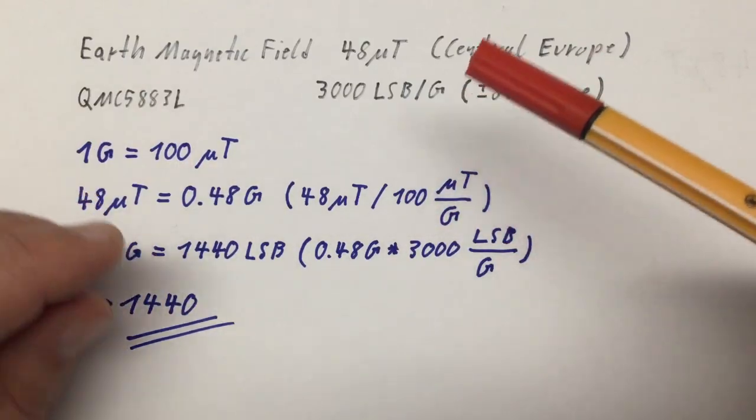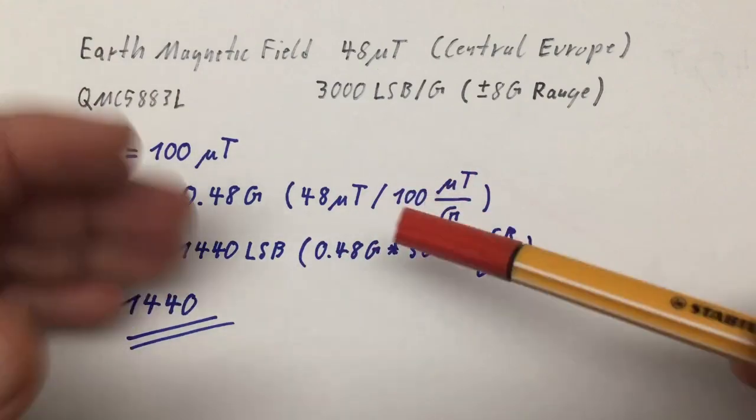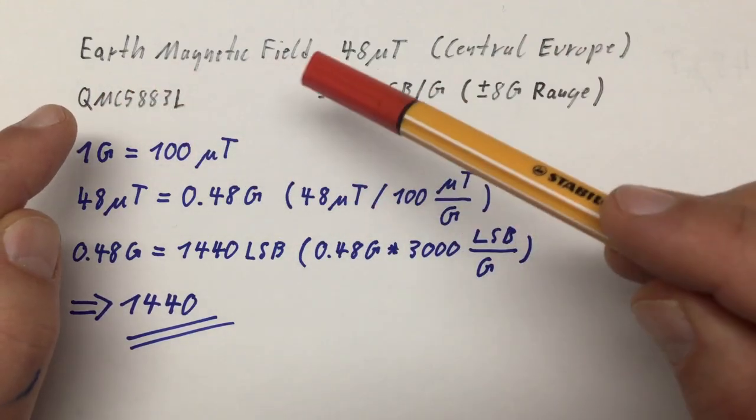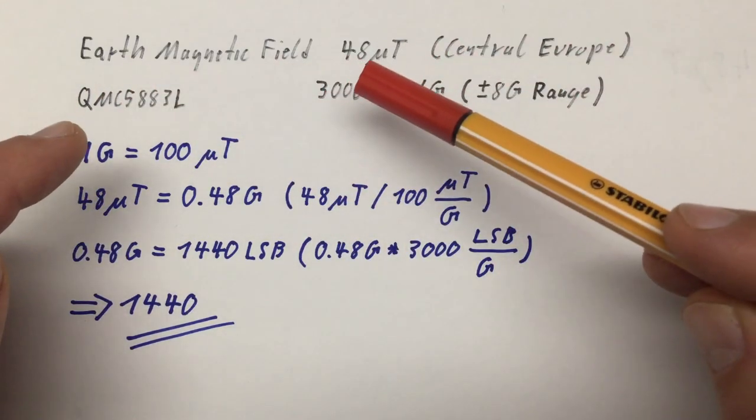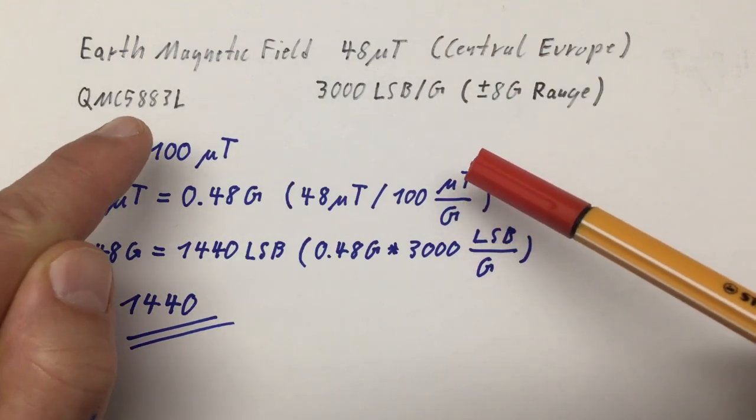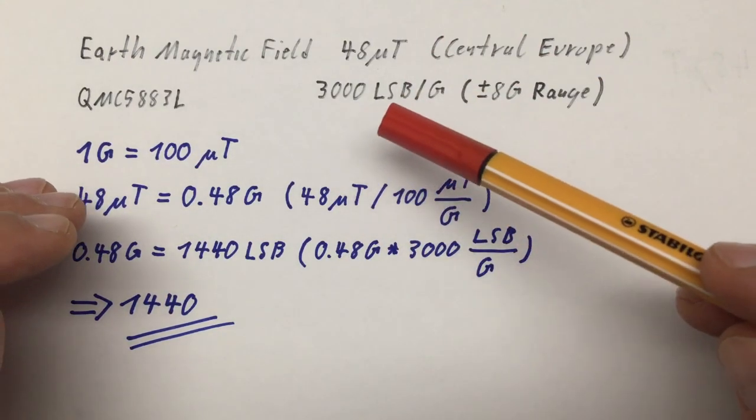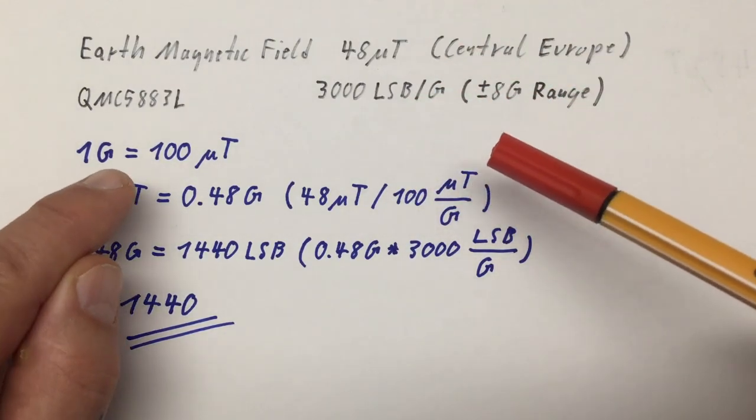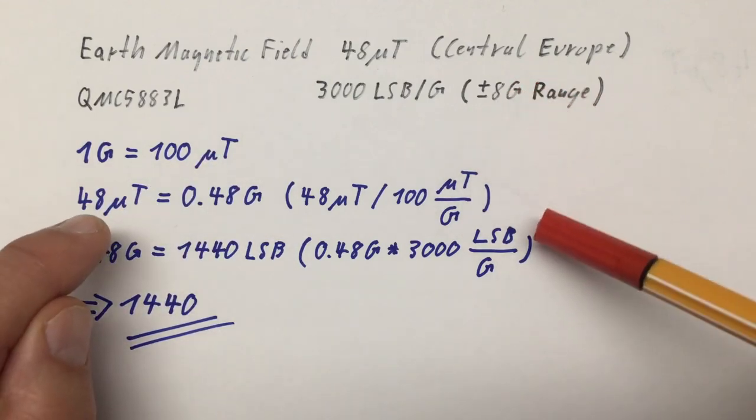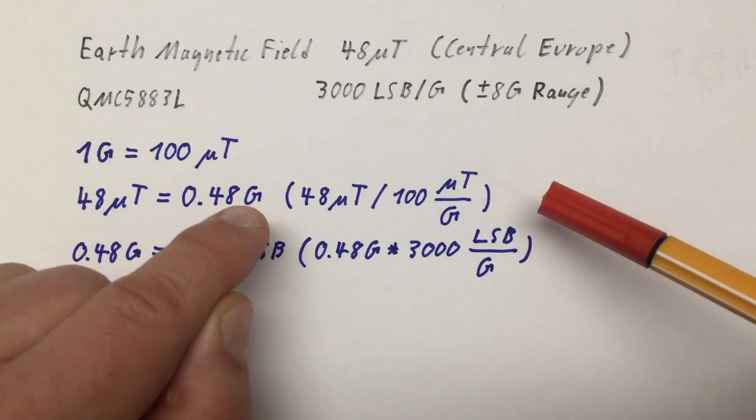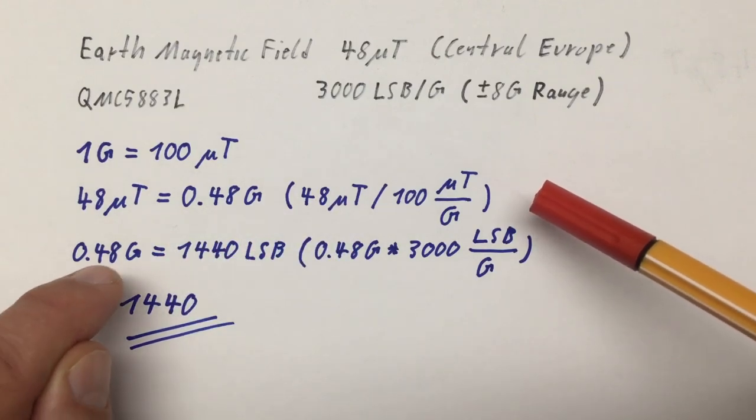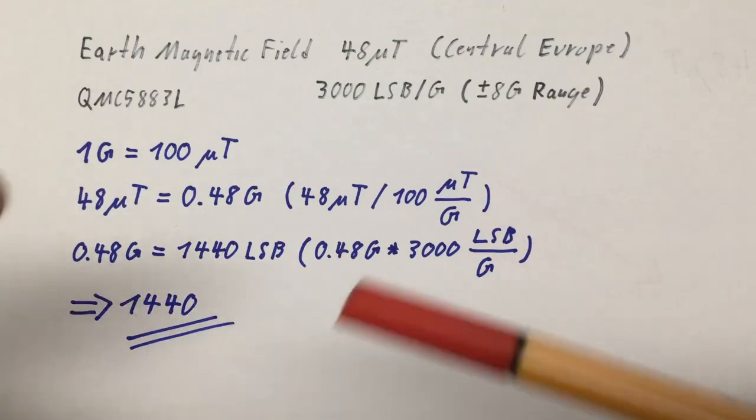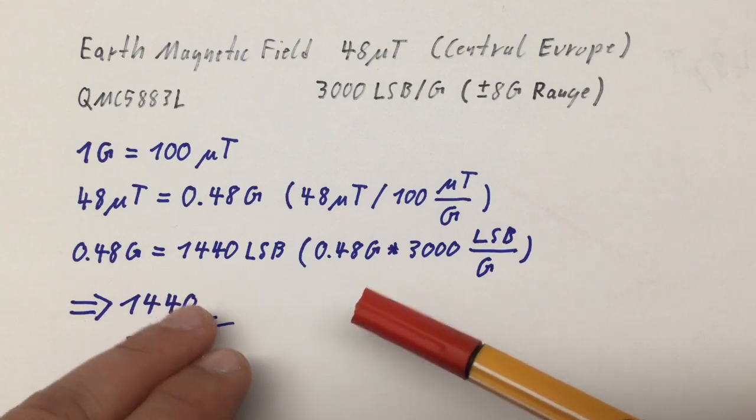The software requires you to enter the strength of the Earth magnetic field in the units you measured it. The Earth magnetic field here in Central Europe is about 48 microteslas. The QMC 5883L gives you 3000 least significant bits per gauss in the 8 gauss range. 1 gauss is 100 microteslas, so 48 microteslas are 0.48 gauss. These 0.48 gauss are 1440 least significant bits, so we have to enter 1440 in our software.